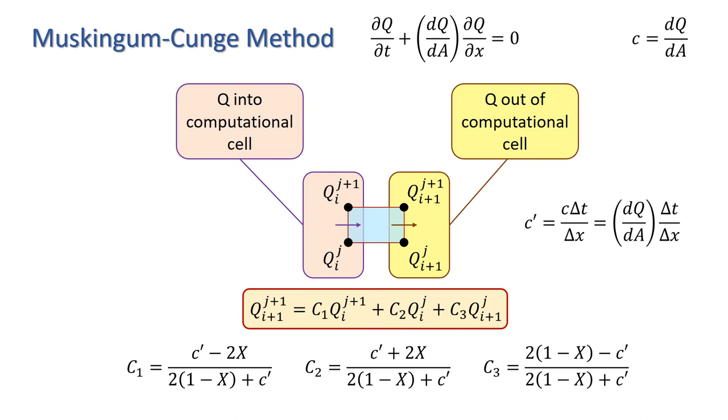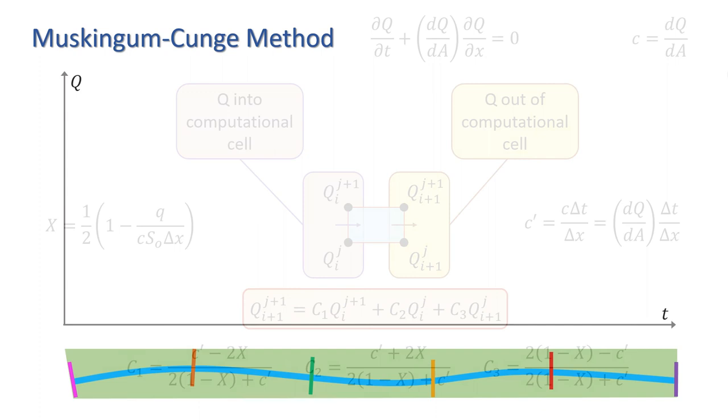Cunge developed equations to estimate c' and x from the hydraulic properties of the reach, and I again refer you to his 1969 paper for details. The expression he derived for x is one-half times (1 minus q over c times s_0 times delta x), where q is the discharge per unit width of the channel and s_0 is the slope.